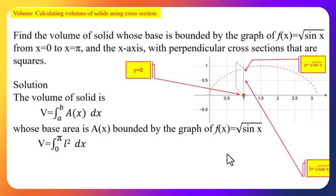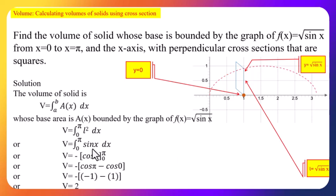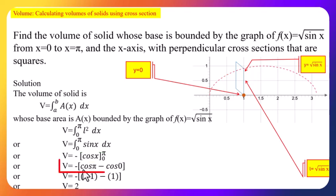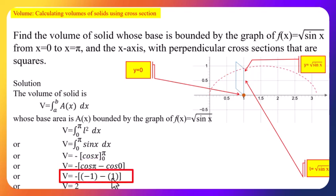Therefore l² = sin x. Integrating sin x gives −cos x, evaluated from 0 to π: −(cos π − cos 0) = −(−1 − 1) = 2. Therefore the volume of the solid is 2 cubic units.